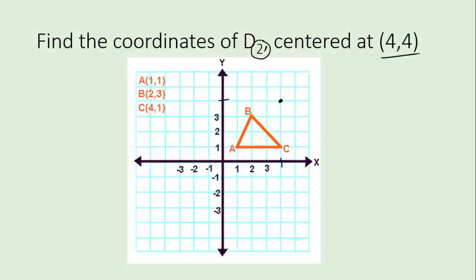Point A at one, one is down three units from the center. The new point A prime is going to be down twice as far because the scale factor is two. Three times two is six, so let's go another three units to double it. This is where the y-coordinate will be — that's the vertical distance between A prime and the center of dilation.